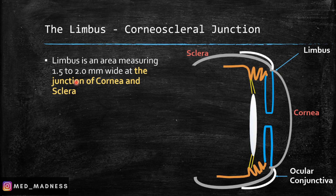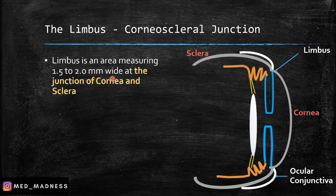Hi, this is Dr. Ram from Edmanus. In this session, we are going to discuss about the limbus histology. The limbus is an area measuring 1.5 to 2 mm wide at the junction of the cornea and the sclera.